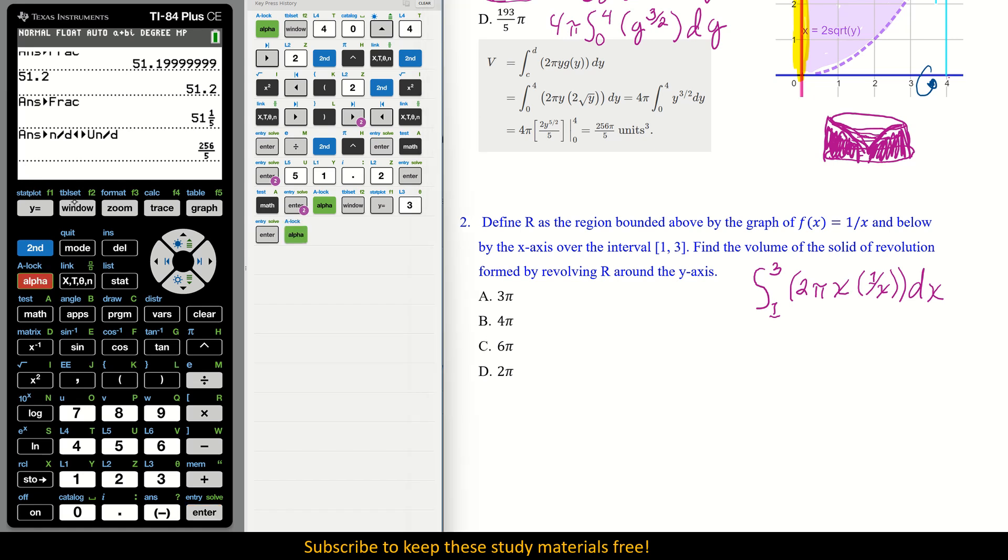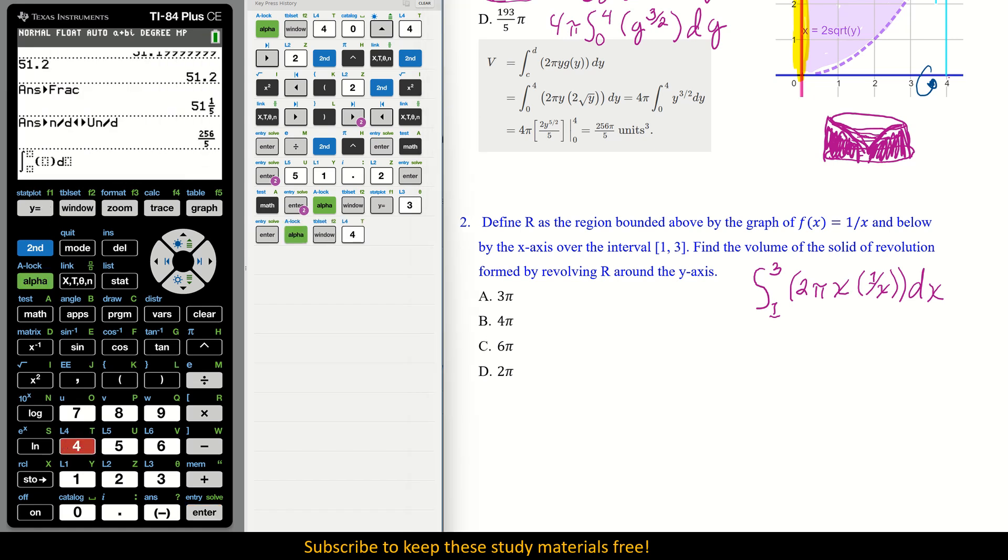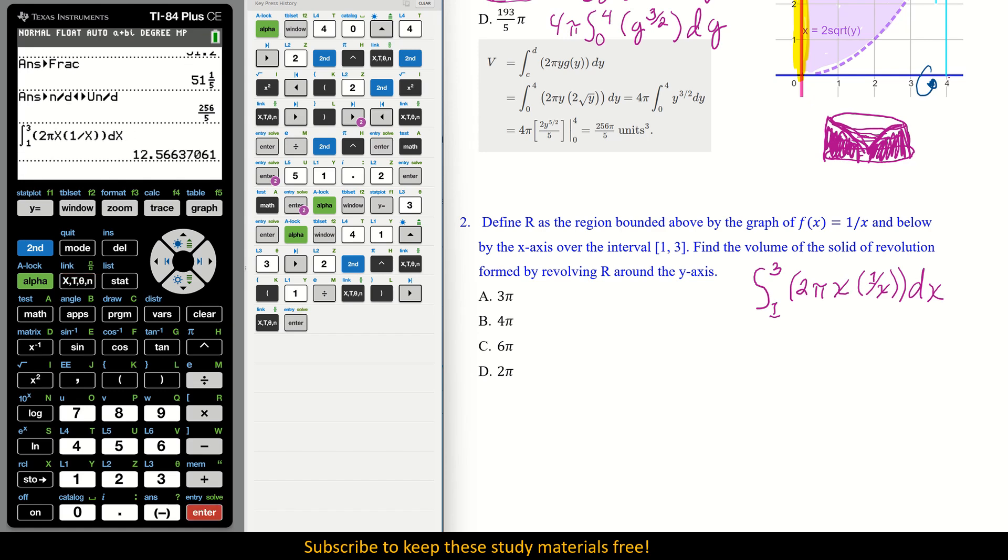Let's do that. So we go alpha window number 4. We have 1 carat up to 3, and we go over 2, 2nd, carat up gives us our pi. Then we put in an x. I'm going to put it in exactly the way you see the formula. So 1 divided by x again, and another parenthesis, and I go over, put in my x. Let's double check that we have the formula the way it's supposed to be. Now let's push enter.